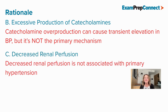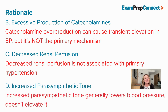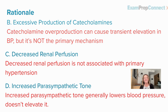C is also incorrect because decreased renal perfusion is typically associated with secondary hypertension, not primary. And D is not correct because increased parasympathetic tone would generally lower blood pressure, not elevate it.